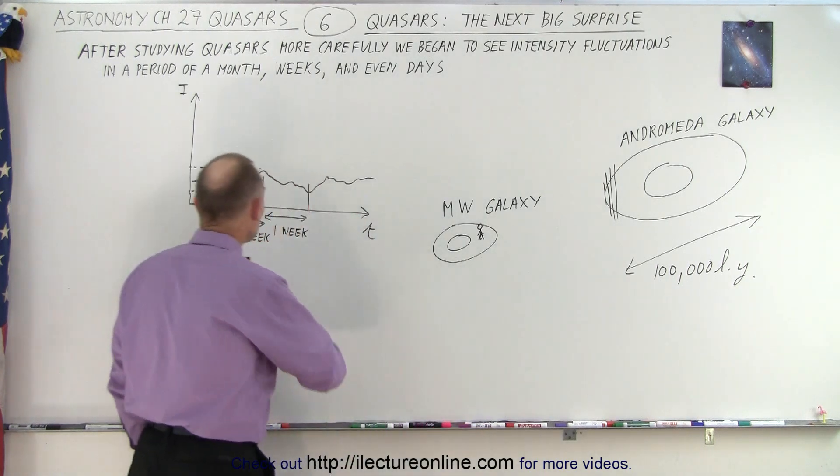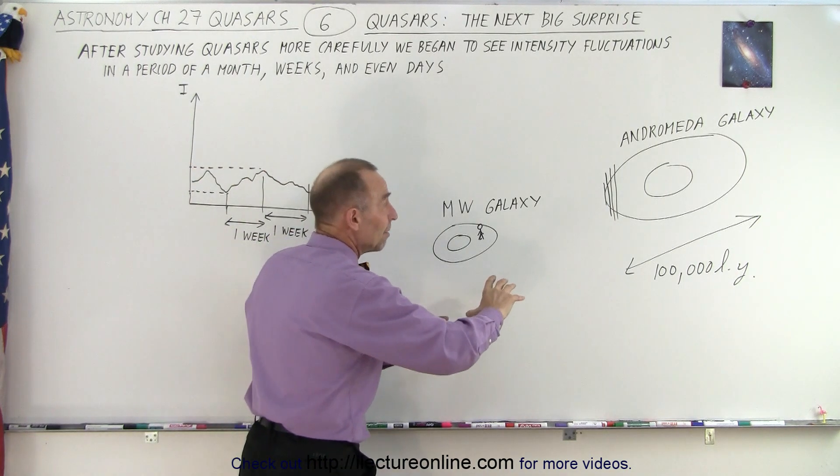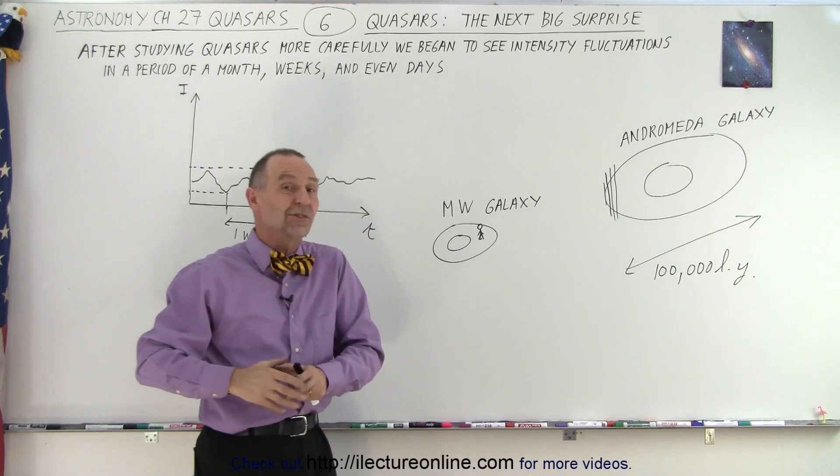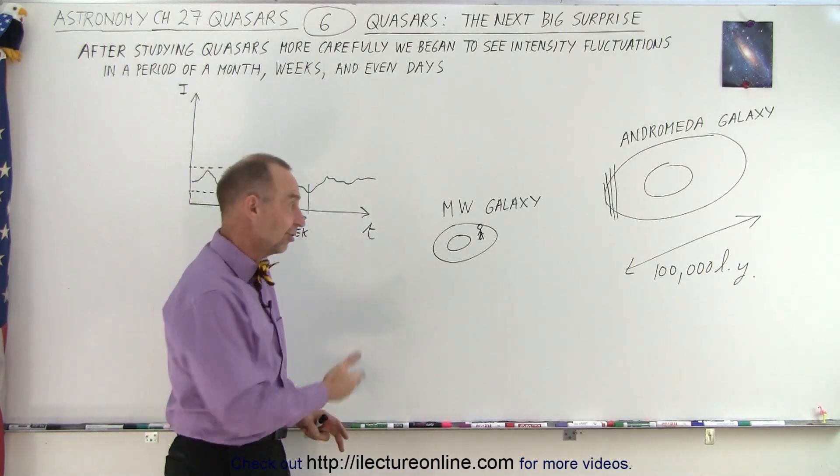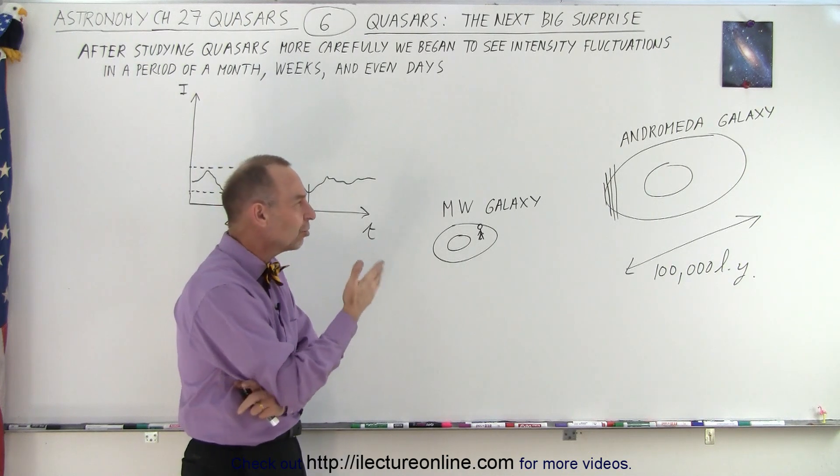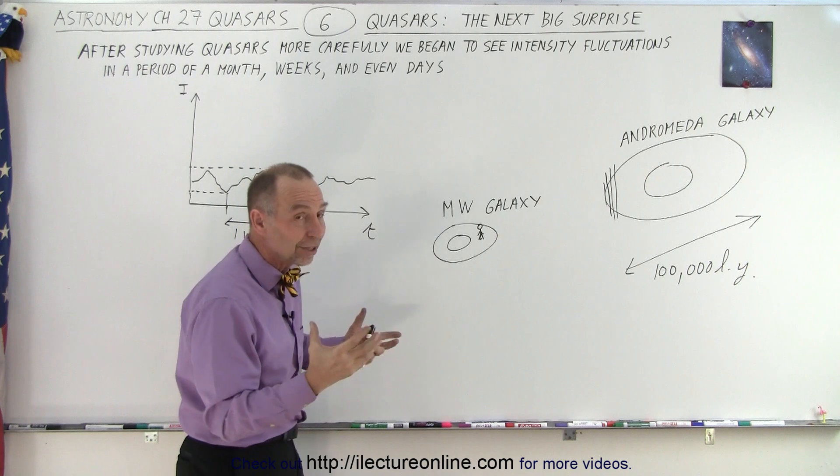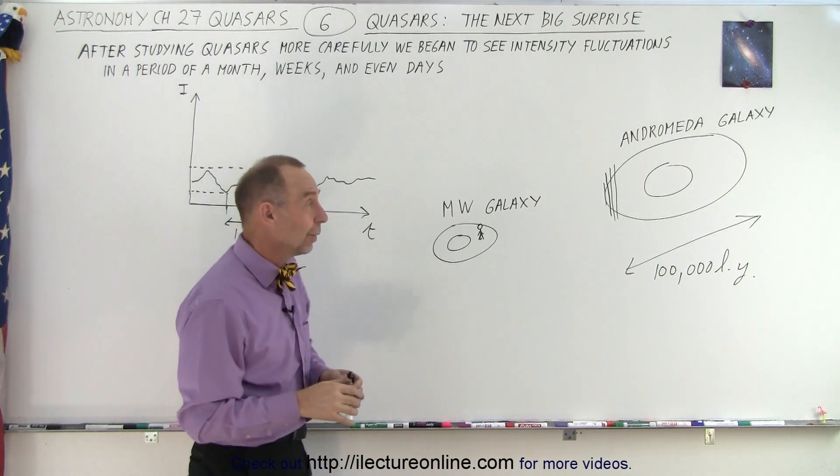So here we see enormous fluctuations that could not be produced by simply making half of the galaxy disappear, because we wouldn't see any changes in this case for billions of years. So what is changing? What is causing these enormous energy fluctuations from an object as big as a galaxy?